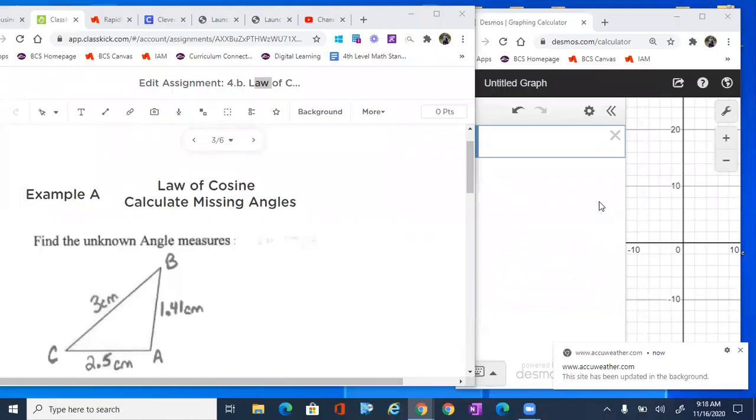All right, we're gonna be using the law of cosine today. We're gonna be calculating missing angles, which is probably the hardest part of the law of cosine.